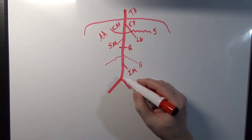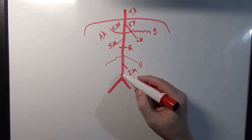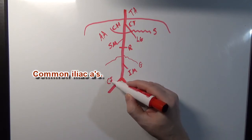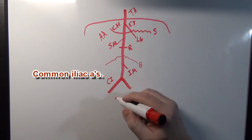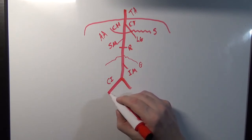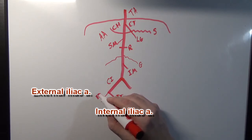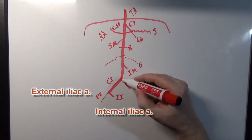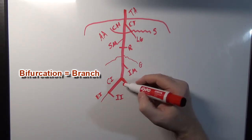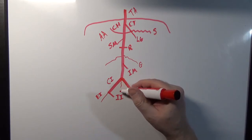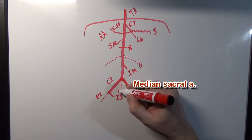Now somewhere around L4 or L5, this abdominal aorta is going to branch into the common iliac arteries. And the common iliac arteries will branch into an internal iliac and an external iliac. Now also, at this bifurcation of the abdominal aorta, there's going to be a blood vessel that goes along the anterior portion of the sacrum right here, and this is going to be called the median sacral artery.